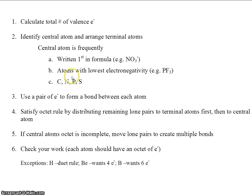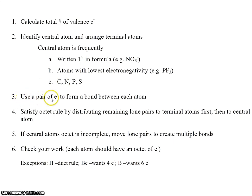Typical central atoms are carbon, nitrogen, phosphorus, and sulfur — especially carbon. Carbon is always a central atom. Third, use a pair of electrons to form a bond between each atom.